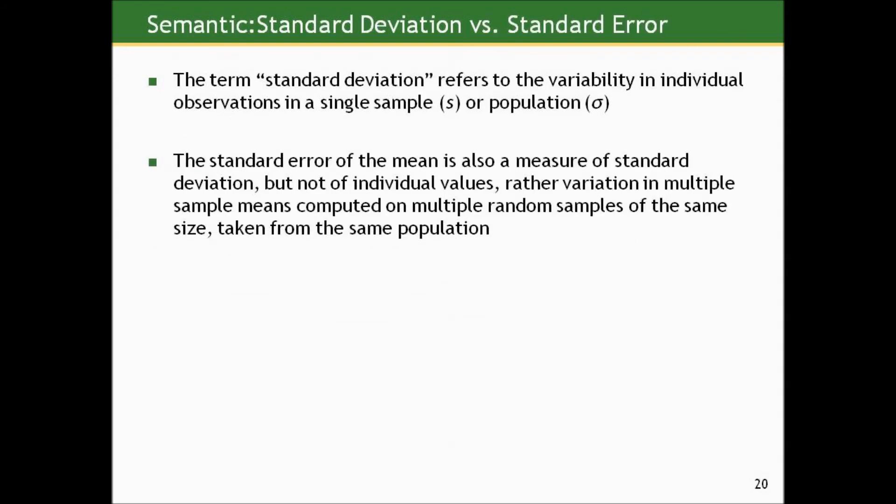It's a common semantic issue in statistics: what we mean by standard deviation versus standard error. When you hear somebody refer to the standard deviation, they're referring to the variability in individual observations in a single sample or population — generally the sample standard deviation, which estimates population variability. The standard error of the mean is also a measure of standard deviation, but it's the variation in multiple sample means computed on multiple random samples of the same size from the same population. Standard error is a type of standard deviation, but applied to summary statistics rather than individual values. In the next section, we'll show how to turn all this theory into practice and actually estimate intervals based on a single sample of data and interpret them.